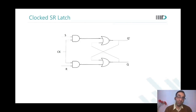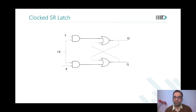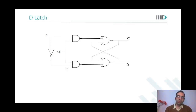An SR latch is storing only one data — Q and Q-bar are complementary to each other. So why have two input pins R and S? Why can't we have just one? What is it called then? A D latch, where you have D and D-bar as inputs, and the outputs Q and Q-bar are available.